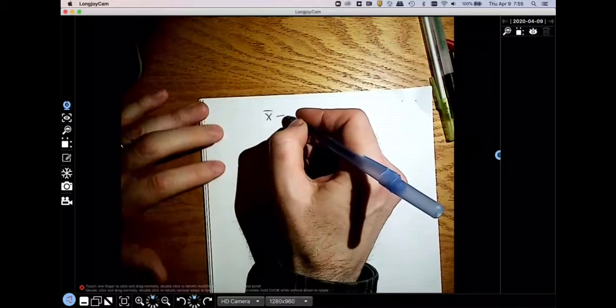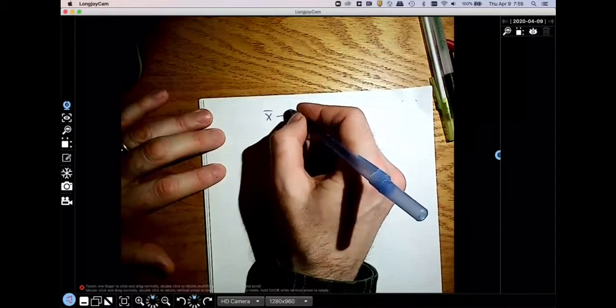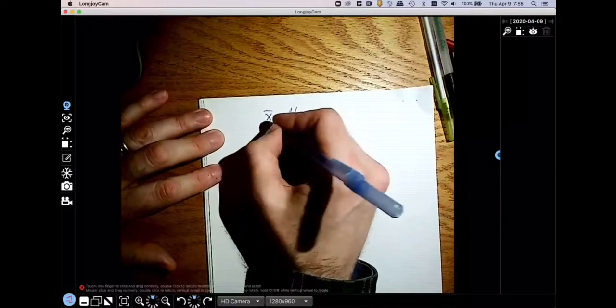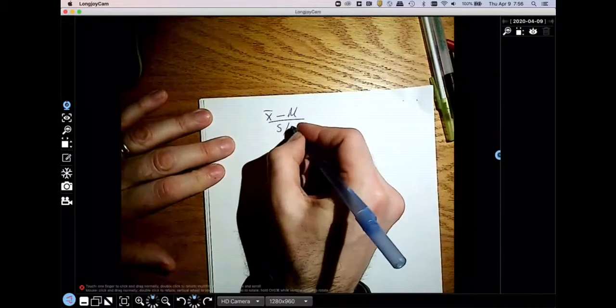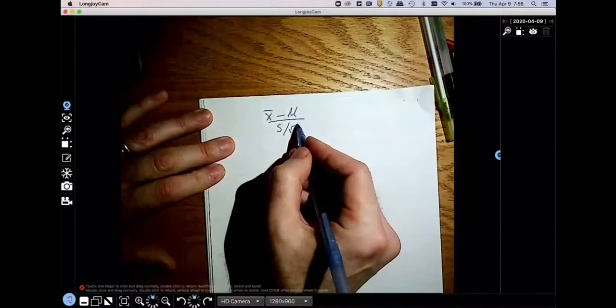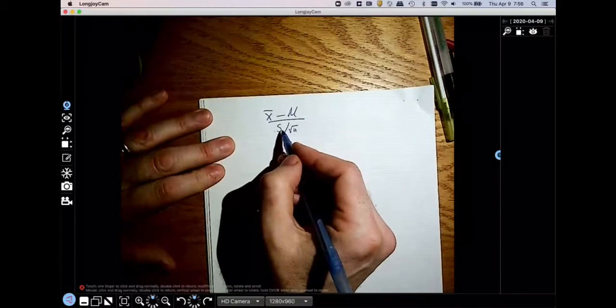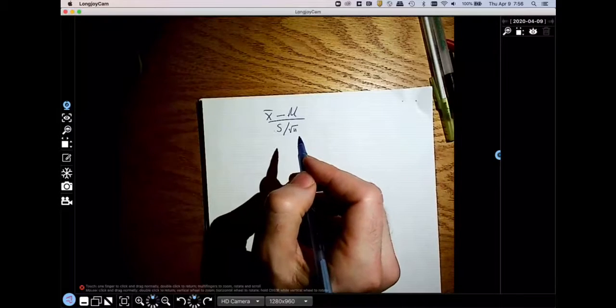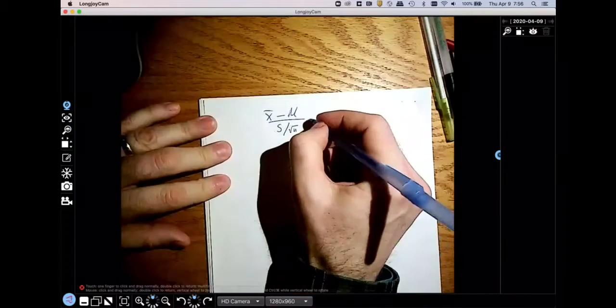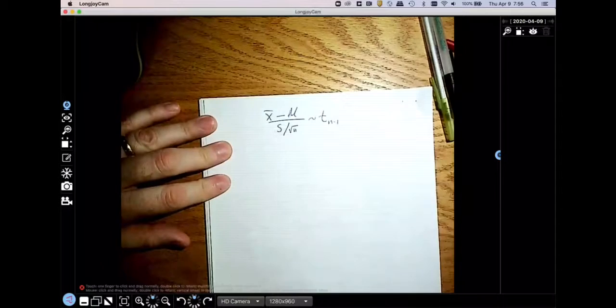so x bar minus the mean, and then if I divide by the sample standard deviation over root n, so this is the standard deviation, the sample standard deviation of x bar, or standard error if you want, we know that this has a t distribution with n minus one degrees of freedom.